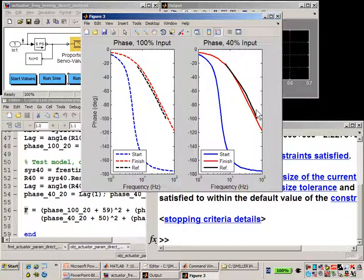So with this example, we see that with optimization algorithms, we were able to match the characteristics from the data sheet very easily.